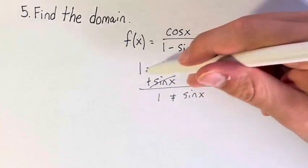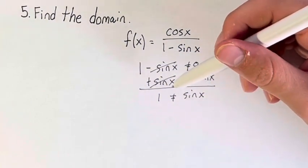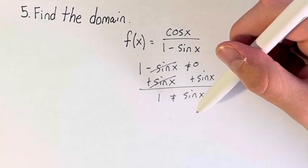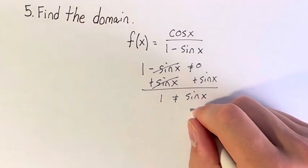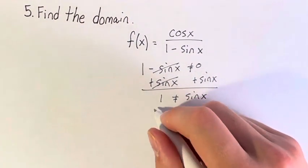Now there's no super easy way to solve this. You kind of just have to know your sine values, right? So practice your unit circle. We get that x is not equal to pi over 2.